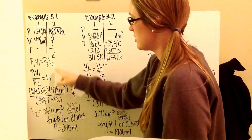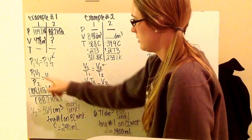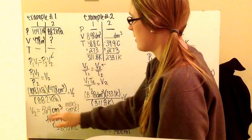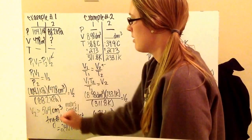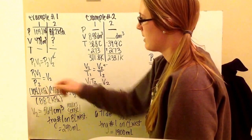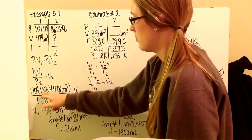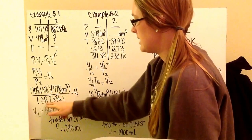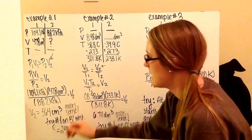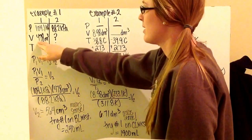I rearrange my equation to solve for V2 by dividing both sides by P2, giving me P1V1 over P2 equals V2. I plug in my variables: 104.1 kilopascals times 478 centimeters cubed, divided by 88.2 kilopascals.